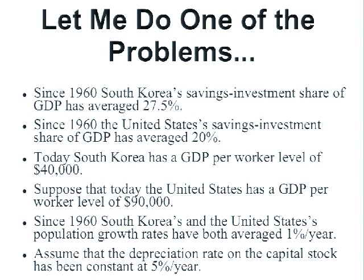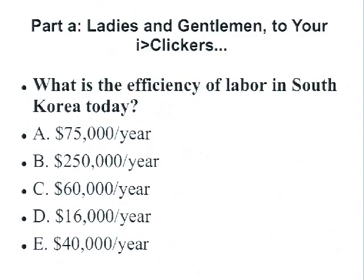The computer thinks it's gotten 77 responses. These are hard to do live and under pressure — I only get them right two-thirds of the time. We're at 53% for the right answer. The right answer comes from S over (n + g + delta), giving a capital-output ratio of 2.5, so that GDP per worker equals 2.5 times the efficiency of labor. That gives an efficiency of labor for South Korea today of $16,000 per year — that's what we're looking for.